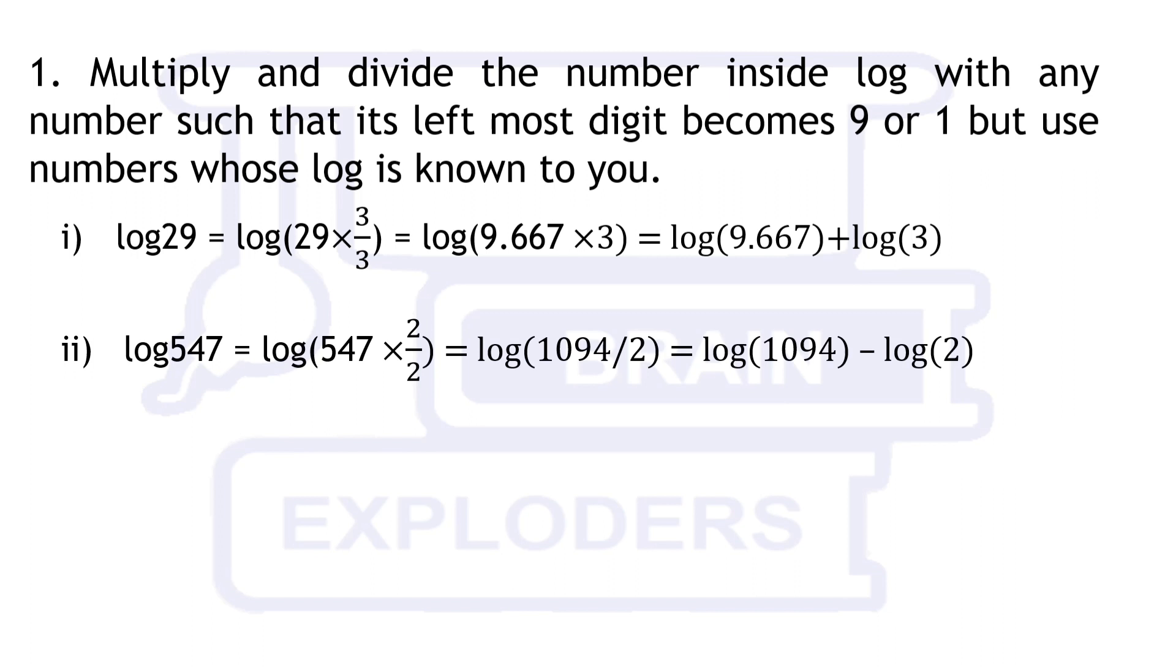If we multiply 547 with 2, then the result is 1094. So we will divide and multiply by 2. In the next example, 6723 is a multiple of 3 whose value is known to us, therefore it is better to factorize it first and do the same thing.